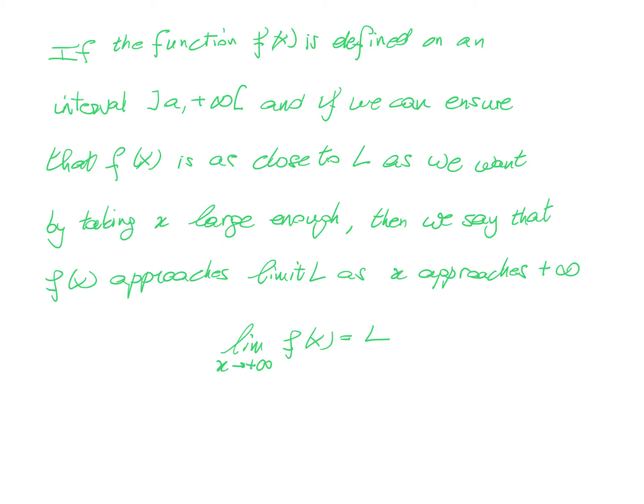The changes that we made are, first of all, here in the interval. Before, we had an interval around the limit point. Now, we have an interval around plus infinity, so it is a one-sided interval with values smaller than plus infinity, because we cannot have values larger than plus infinity. And then we also say we take x large enough, so instead of x going to our limit point, we say x goes to plus infinity.